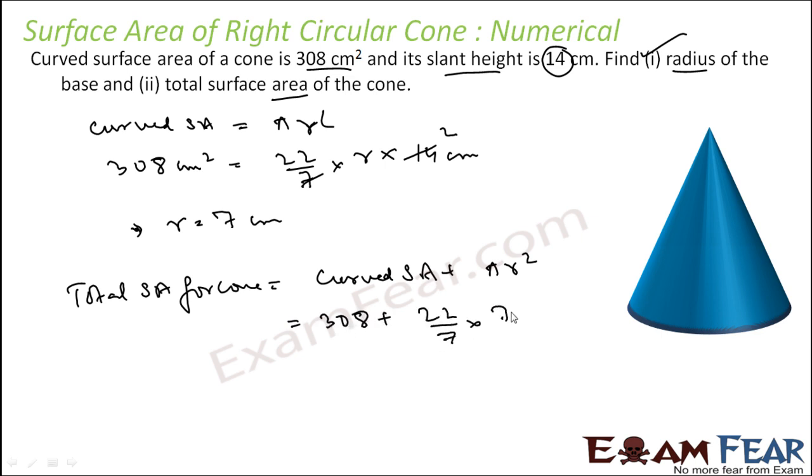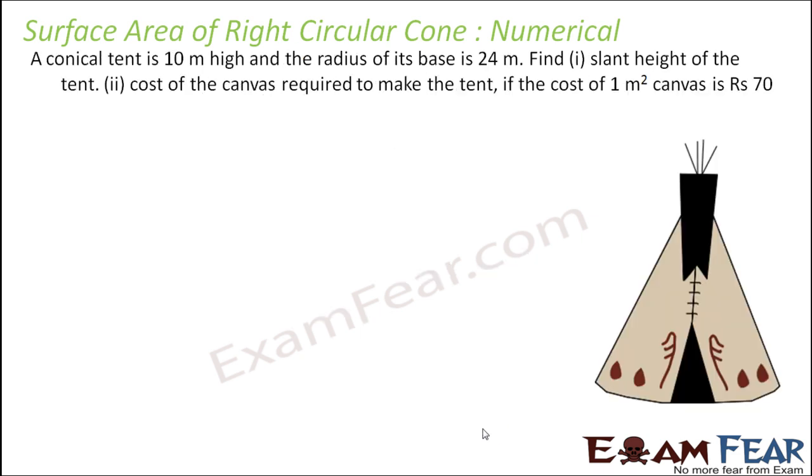That is 308 plus pi is 22 by 7. R we just found 7 into 7 cm square. So you solve this, this becomes 308, this becomes 154 cm square, and that is 462 cm square. Let us take another question.